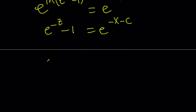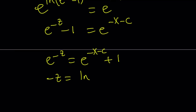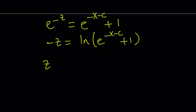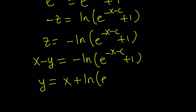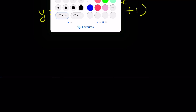We can go ahead and isolate e to the power negative z and write it as e to the power negative x minus c plus 1. Then taking ln of both sides gives us negative z equals ln of (e to the power negative x minus c plus 1). Negating both sides gives z equals negative ln of (e to the power negative x minus c plus 1). But remember we used substitution — z is equal to x minus y. Replacing z and solving for y: y becomes x plus ln of (e to the power negative x minus c plus 1).